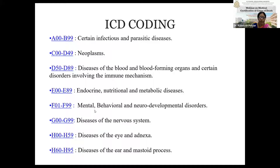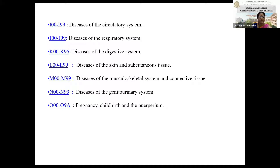F09 to F99 covers mental, behavioral and neurodevelopmental disorders. G00 to G99 covers diseases of the nervous system. H009 to H59 includes diseases of the eye and adnexa. H60 to H95 includes diseases of the ear and mastoid process. I00 to I99 includes diseases of the circulatory system. J00 to J99 includes diseases of the respiratory system.